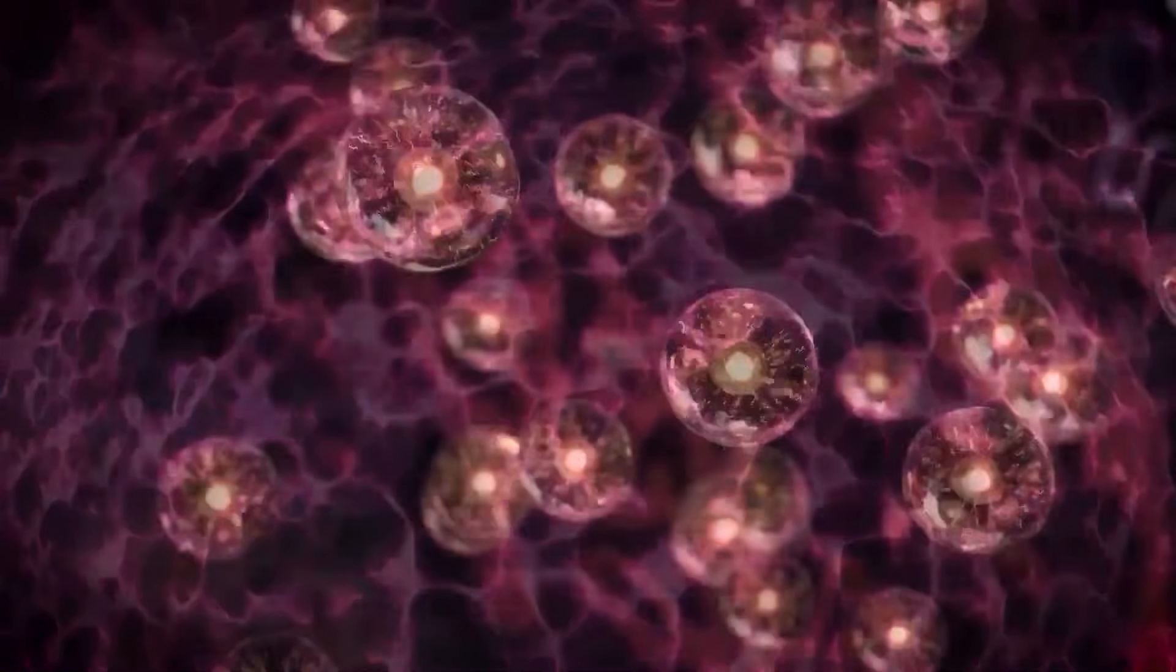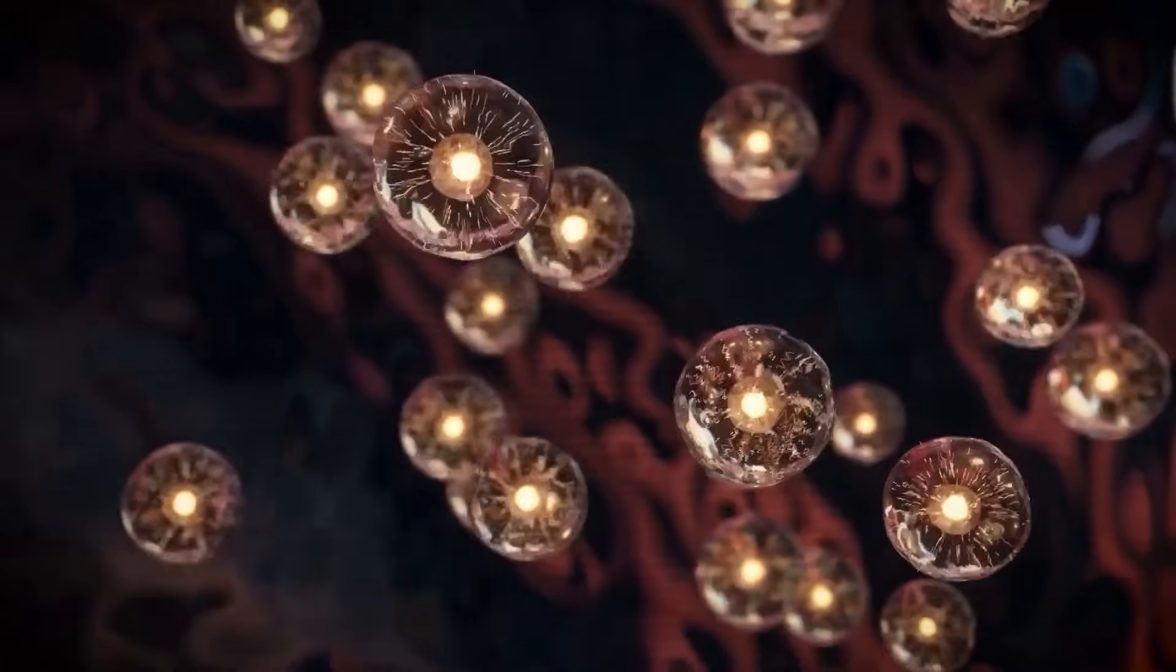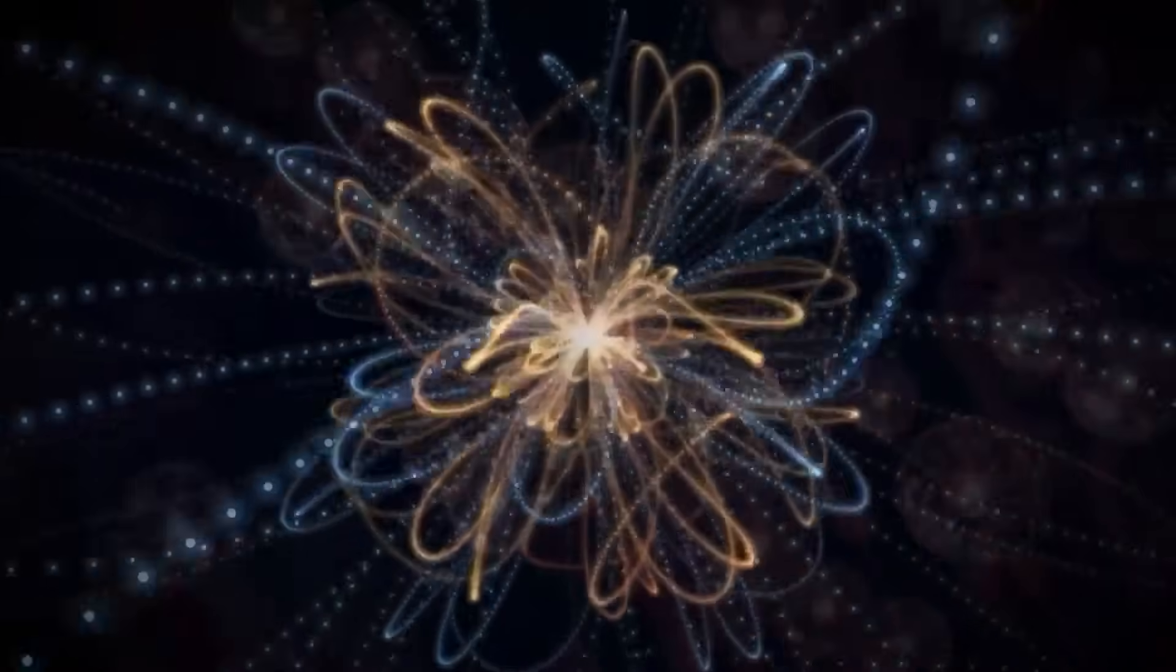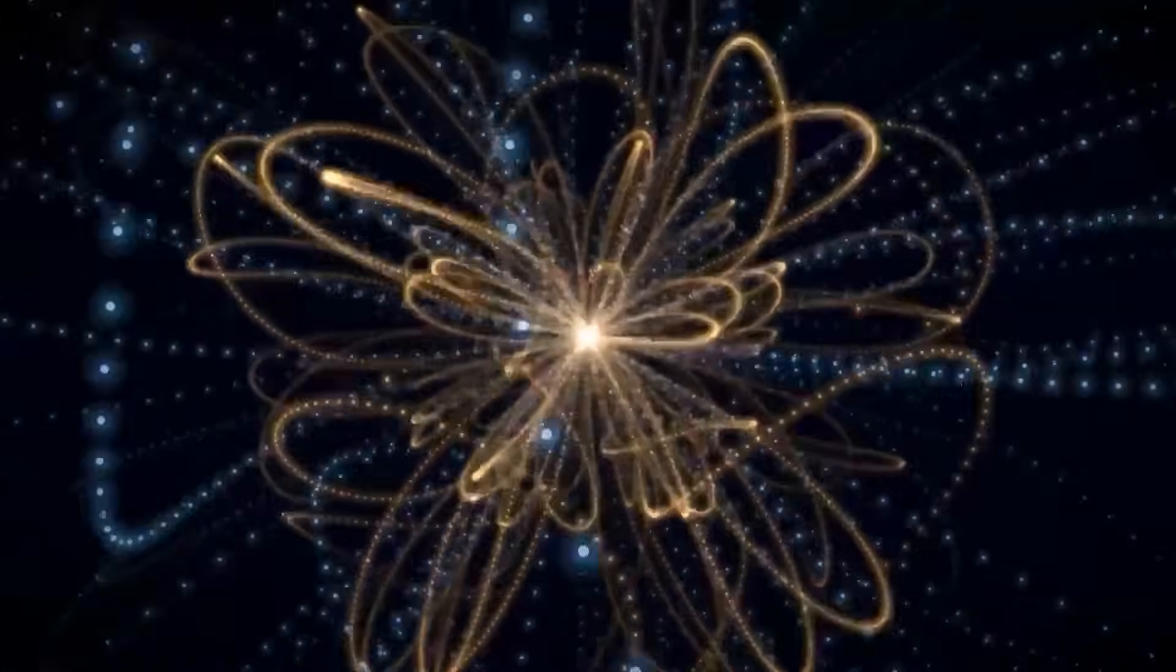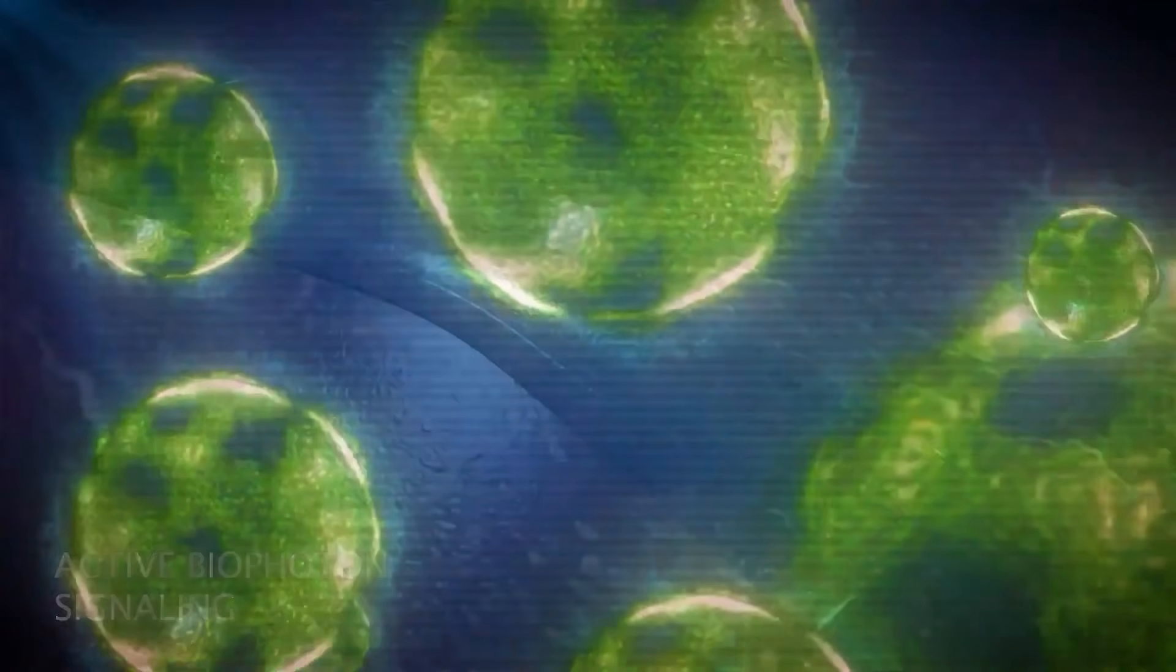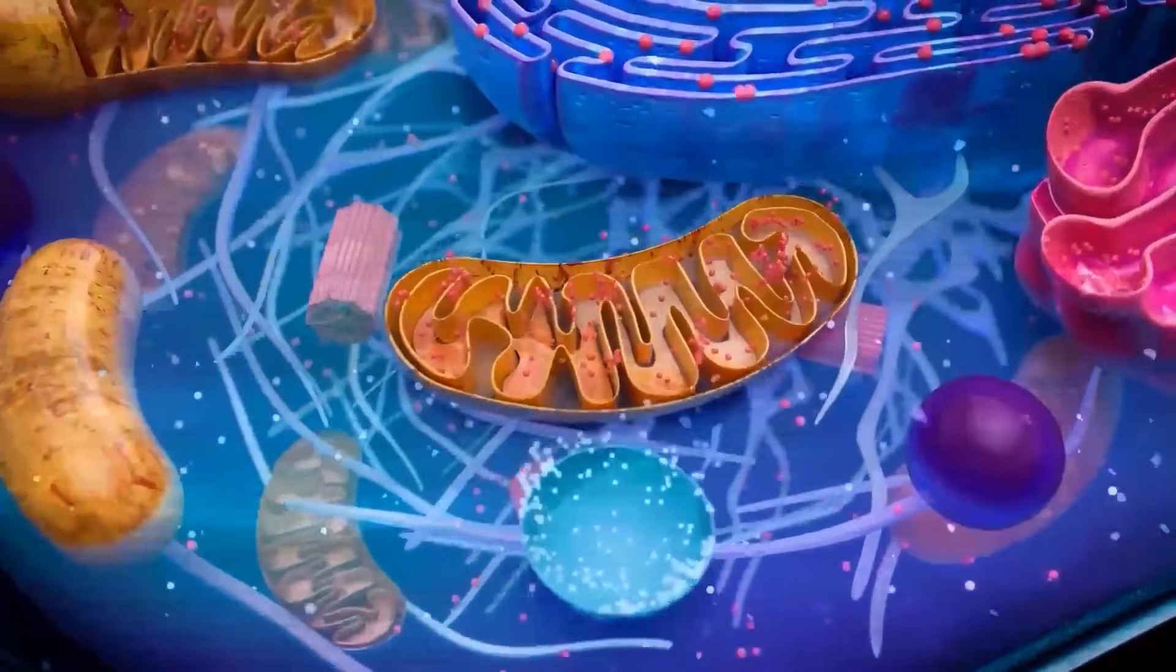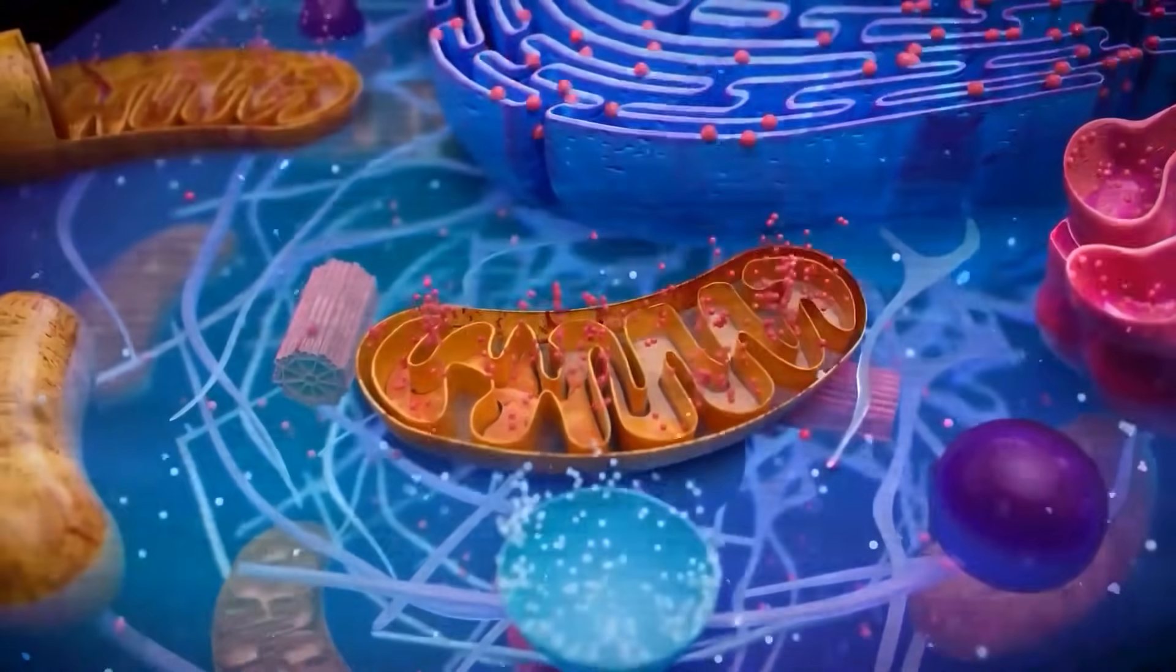Okay, so cells glow and their glow changes, but are other cells watching? The evidence points to yes. This is active biophoton signaling, as explored in cell communication research. Your cells might be using light for rapid information transfer, coordinating complex tasks across tissues. This cellular light communication could operate alongside or even faster than our known chemical signals.